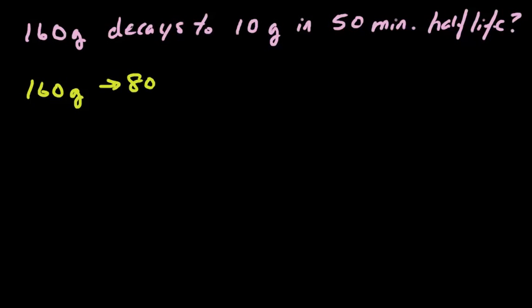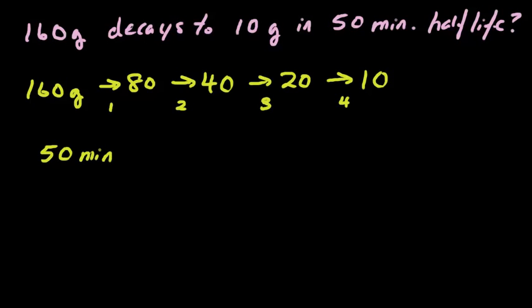We started with 160 grams. We go to 80 after one half-life. We go to 40 after a second half-life. We go to 20 after a third. And then we go to 10 after a fourth. So we count one, two, three, four half-lives. If it took 50 minutes total for all of this to happen, then we would have 50 minutes divided by four half-lives, because we have four of them. So each half-life would be 12.5 minutes.